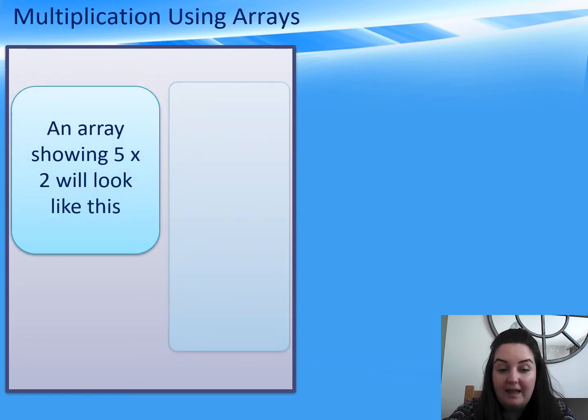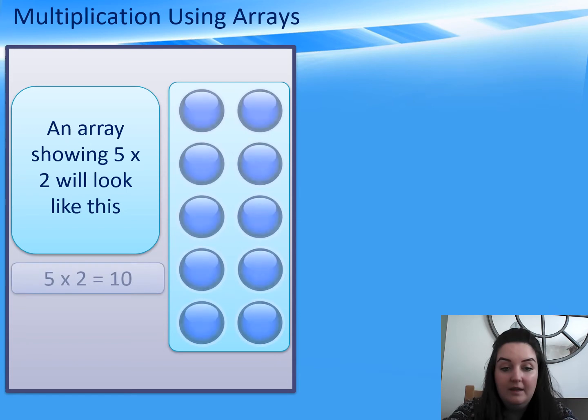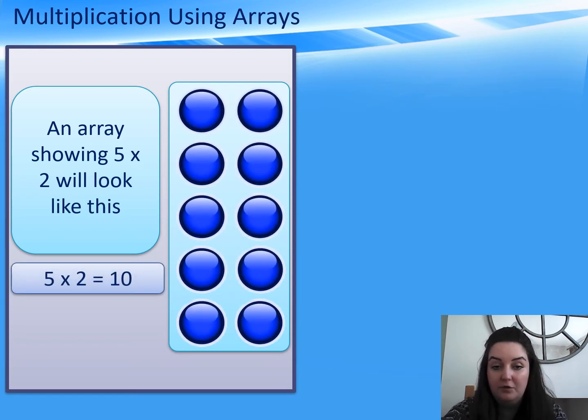An array that's showing 5 times 2 will look like this, because there are 5 lots of groups, so 5 equal groups going down, and then there is 2 in each group. 5 lots of 2, 5 times 2, and the answer is 10.